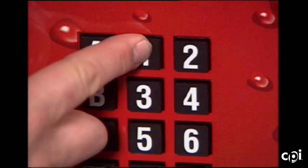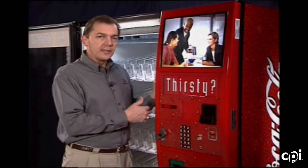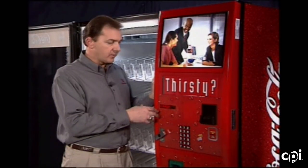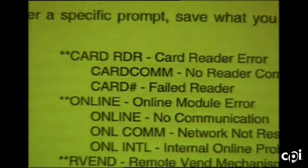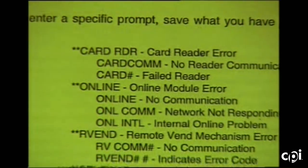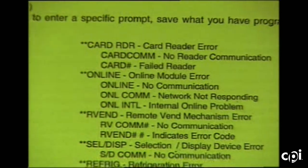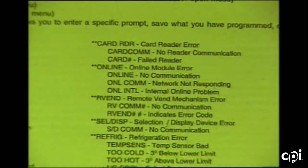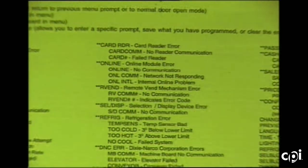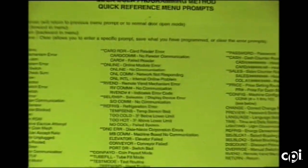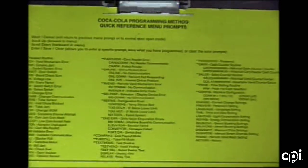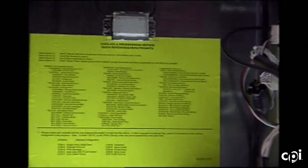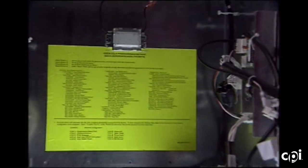Pressing button number 1 will take you back to the beginning of the error codes. For a complete list of error codes, the card on the back wall in the service area has a list of all the various error codes and gives self-explanatory guidance on those.